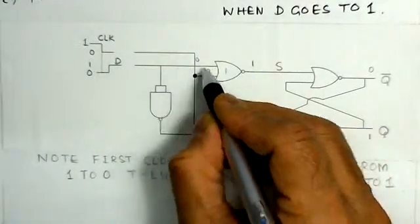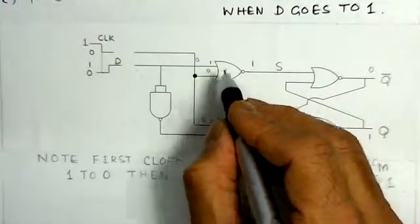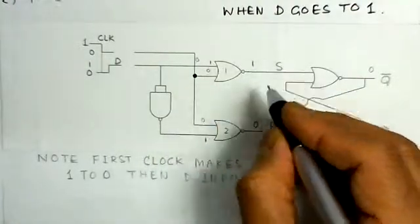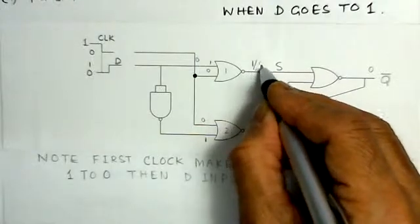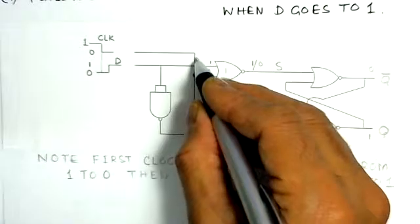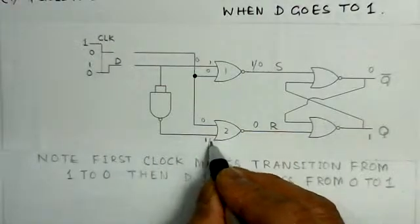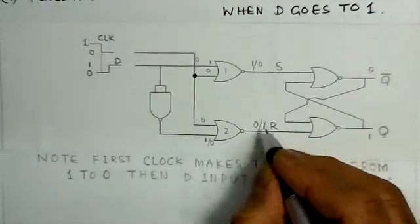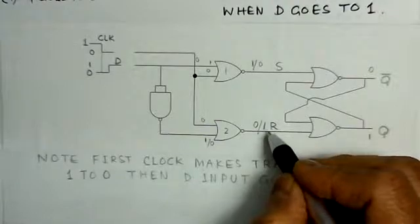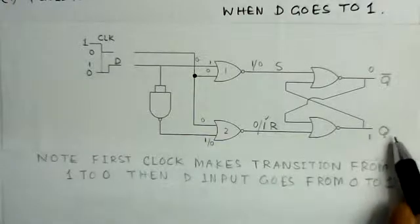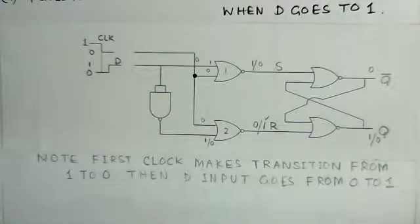When D makes its transition from 0 to 1 after the clock is already low, D=1 makes one NOR gate input 1 while the clock input remains 0. This causes that NOR gate output to become 0 (S=0), and the inverted D is now 0, so the other NOR gate output becomes 1 (R=1). This is the reset state, and the Q output becomes 0.